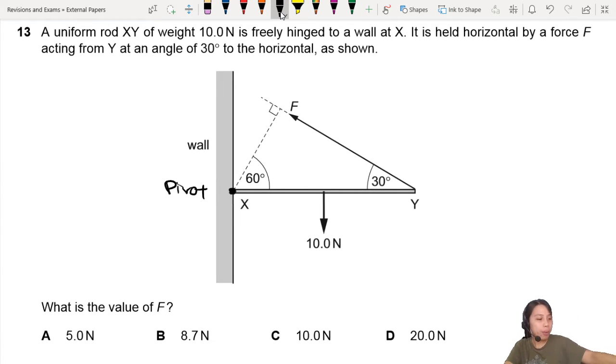We stay calm and we remember what is moment, how to find moment, and what is equilibrium. Is this rod in equilibrium? I would say it's held horizontal, so kind of implying that it's in equilibrium. So equilibrium means that the clockwise moment or torque equals to the anticlockwise moment or torque.